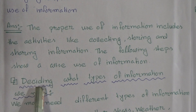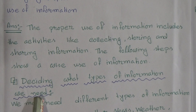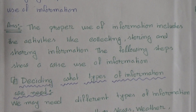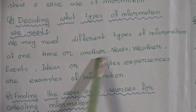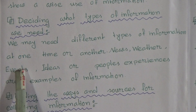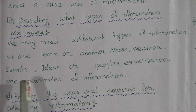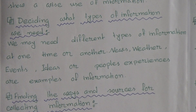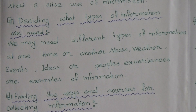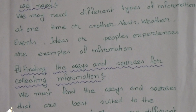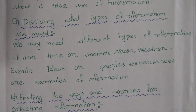Number 1: Deciding what types of information we need. We may need different types of information at one time or another. News, weather, events, ideas, or people's experiences are examples of information. For example, we want to collect news from newspaper or media, weather information, cricket or football events, or any kind of ideas like cooking, baking, or scientific ideas.